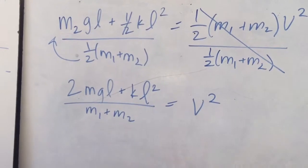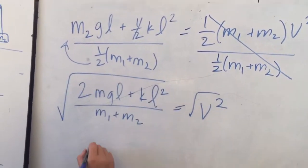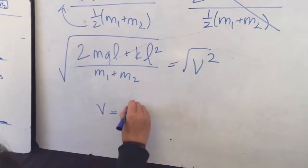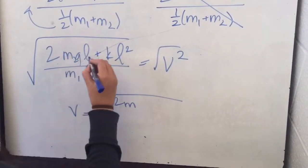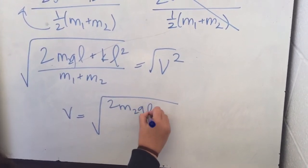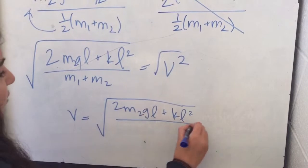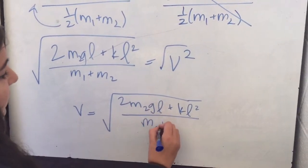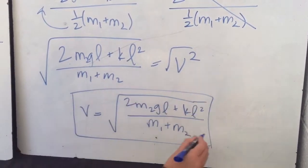And to get the velocity by itself, we're going to take the square root of both sides. So our final answer is 2 mass, oh this is the second mass, over both of the masses combined. That is our final answer. Thank you.